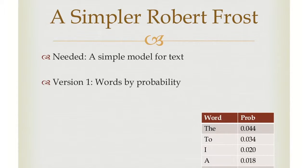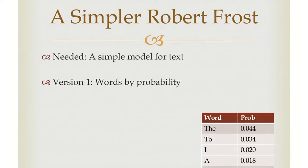So we're going to put this solution aside and look at a new solution: let's try to figure out a model to sort of model what we think Robert Frost's poems are like. If we understand this model well enough, we can use it to generate more text. The simplest model is just to look at words by their probability in Robert Frost's poems. We're going to take lots of Robert Frost poems — about 20 — put them all into a huge text file and count the number of times each word appears. We'll get something like what you see on screen: the word 'the' has been used about 4.5% of the time, 'to' about 3.5%, 'I' about 2%, and so on.